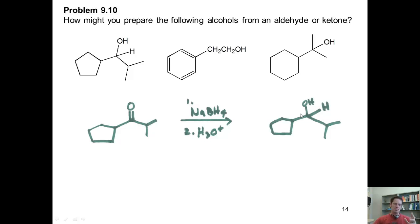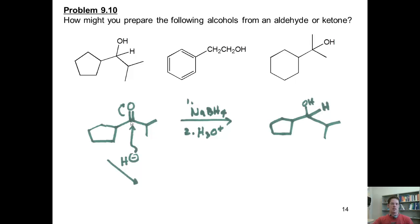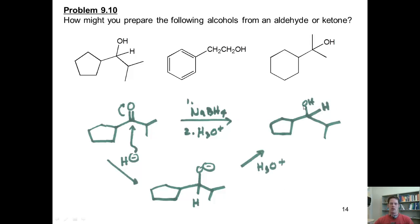What is the mechanism? Remember, sodium borohydride is really just a source of H minus. So when I take this ketone and treat it with sodium borohydride, I'm reacting it with H minus that goes into this carbonyl carbon and thrusts the electrons up onto the oxygen. That gives me this intermediate. When this intermediate is protonated, it then gives me the final product.